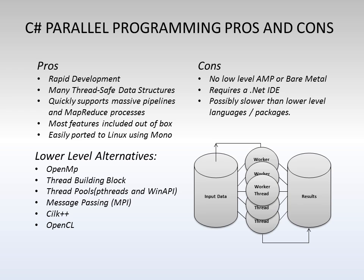First of all, let's go over some of the different pros and cons for parallel programming in C-Sharp. On the pros side, C-Sharp offers a very rapid development environment for parallel programming. It has a whole lot of thread-safe data structures and different parallel building blocks or objects that are available to quickly support building some of your more massive parallel pipelines and map-reduce processes. Most of these features are included right out of the box with the .NET framework.